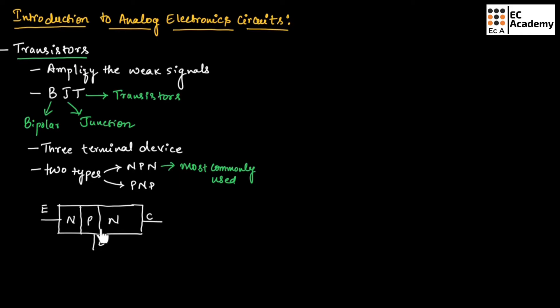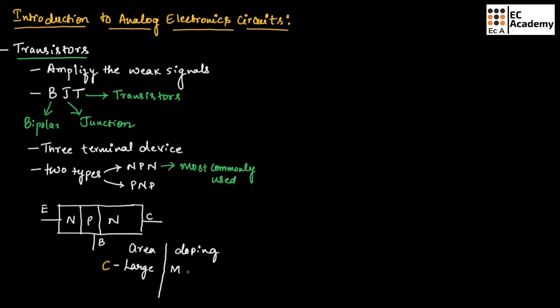The collector has to collect majority charge carriers, so it is moderately doped and has a large area. The Emitter has to emit majority charge carriers so that current can flow — that is why the Emitter region is heavily doped with a medium area. The Base region is lightly doped and has a small area.